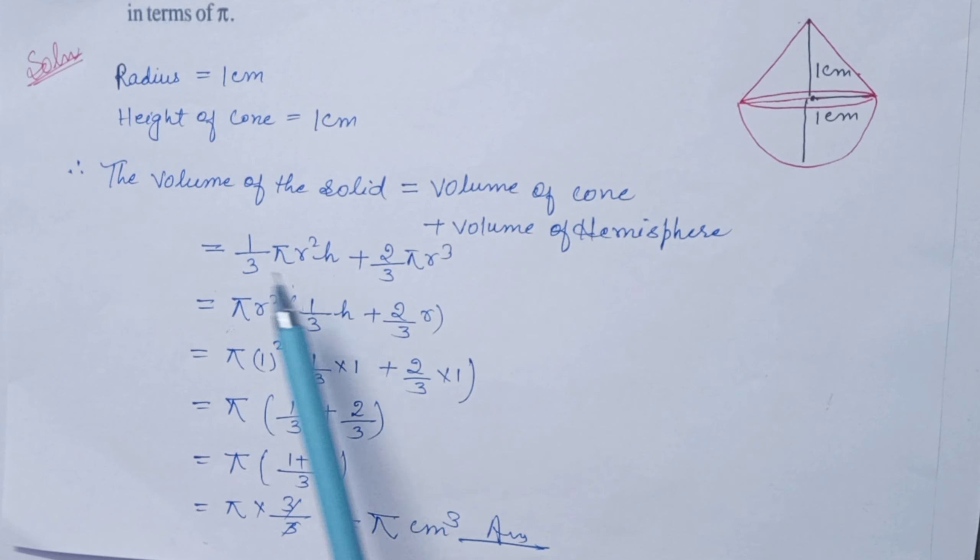What is the volume of the cone? 1/3 πr²h plus volume of hemisphere 2/3 πr³. Now let's see what is common in both terms. We can see that πr² is common. After taking πr² common, we get: 1/3 h plus 2/3 r. We can take 1/3 r common from both terms.